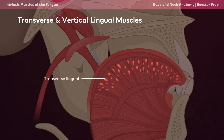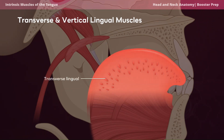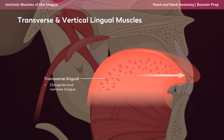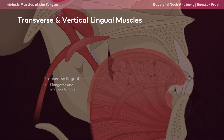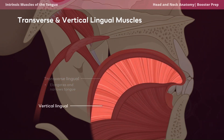The last intrinsic muscles are the transverse and vertical lingual muscles. The transverse lingual muscle fibers run laterally from the medial aspect of the tongue, and this muscle elongates and narrows the tongue.